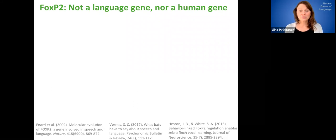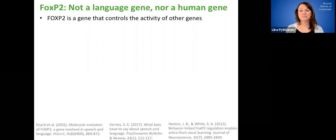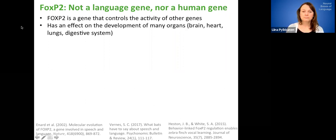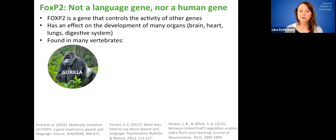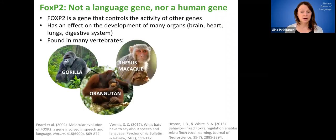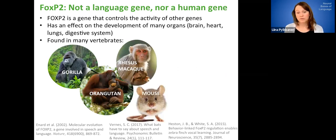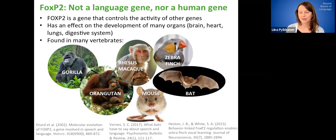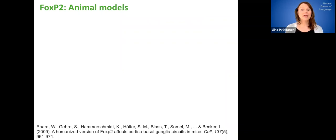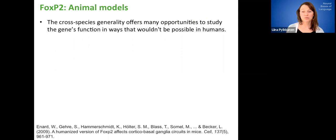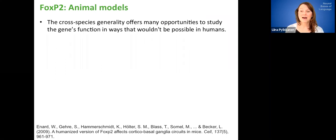And we actually know that FOXP2 is also not anything like a human gene. So in general, it's a gene that controls the activity of other genes and has an effect on the development of many organs like the brain, heart, lungs or digestive system. And we find it in many vertebrates. So not just ones that are kind of close to us like the gorilla or the orangutan, rhesus macaque, but also in species that are quite different from us like the mouse, zebra, finch, the bat. So we have lots of animal models about FOXP2. The cross species generality has offered many opportunities for studying this gene's function in ways that just wouldn't be possible in humans. And that has offered lots of exciting research opportunities.